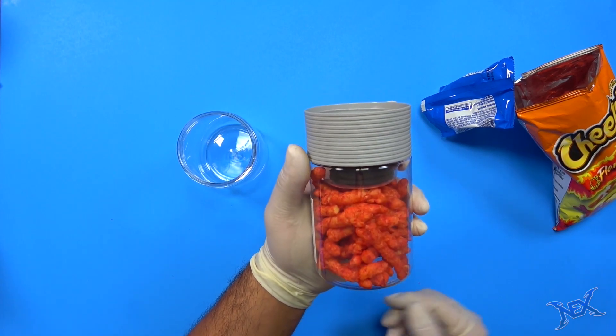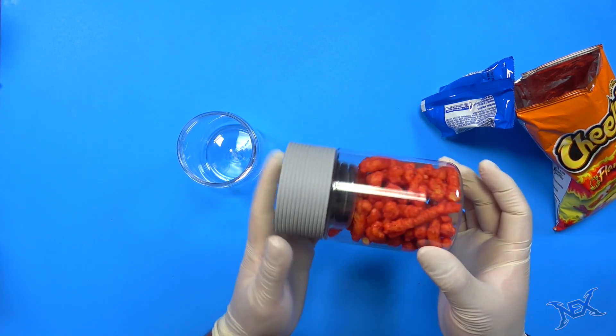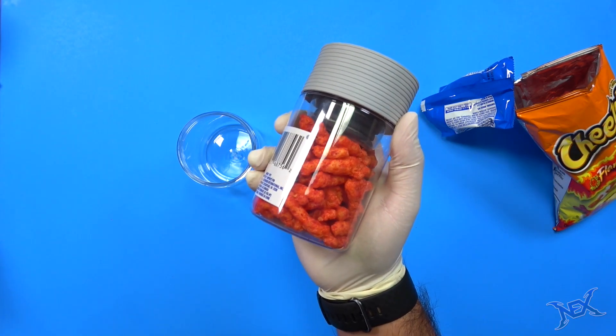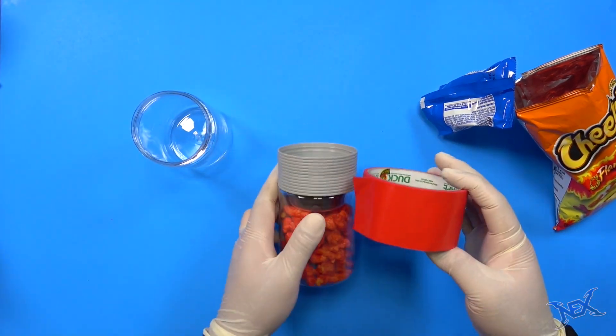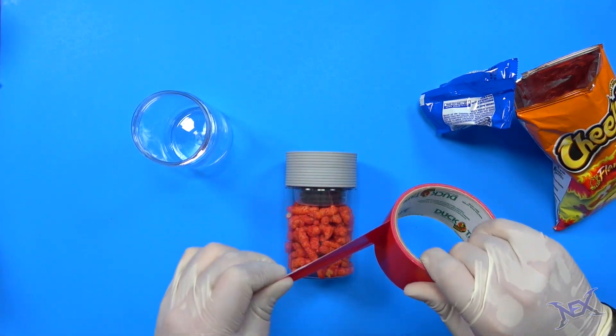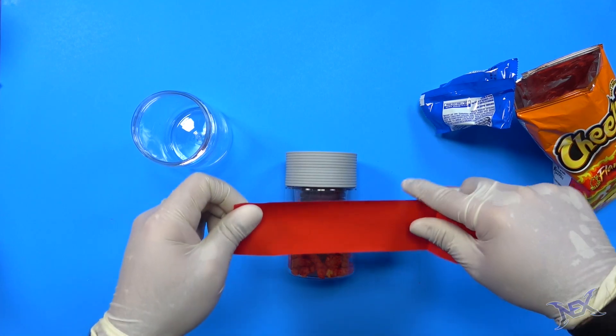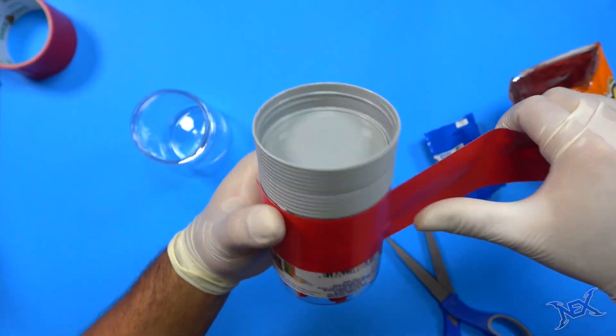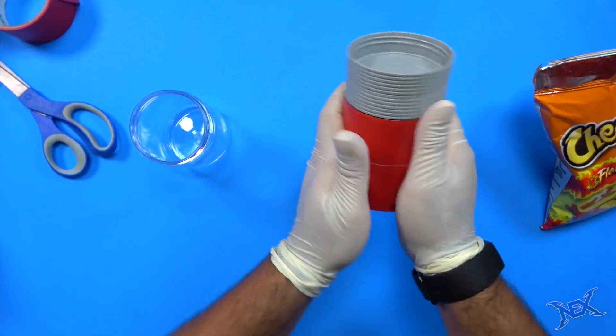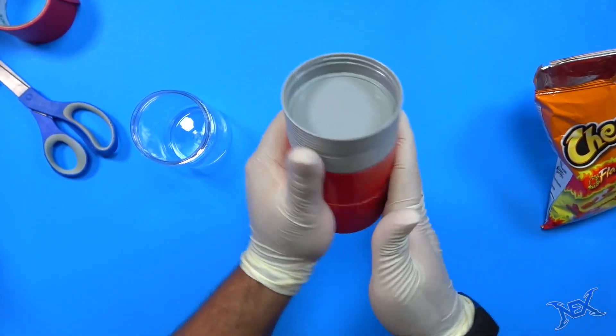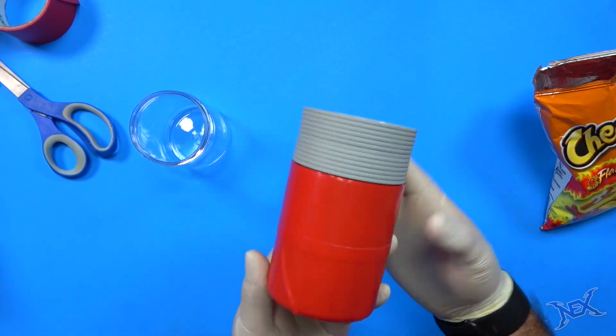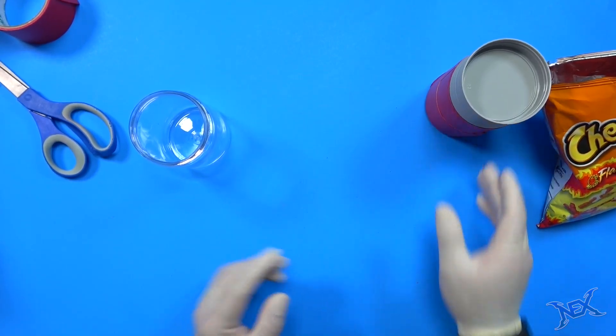But since this is see-through, I gotta cover it. To cover this, I'll just use some tape. I had some leftover tape from my last video and I'm just gonna wrap this around it so you can't see the Hot Cheetos anymore. We have officially covered our tracks as far as the Hot Cheetos and the Oreos, so now we'll put this aside.